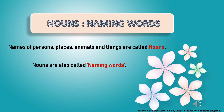So children, just have a look around you. What do you see? You see many things. You see a table, you see a chair, you see your mother, your father, your brother, your sister and many more things. Everything that you see around yourself has a name.